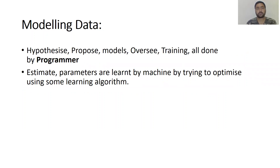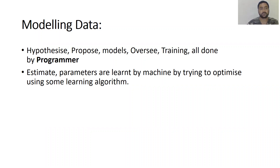For modeling data, the programmer generates hypotheses, proposes models, and decides which algorithms to use for training. However, estimating and learning parameters is done by the machine. The machine uses learning algorithms to optimize results and solutions. The programmer defines which algorithms to use for modeling, while the machine handles learning and optimization.